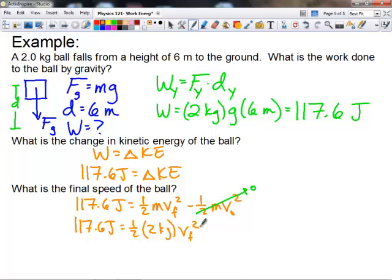So we'll say 117.6 joules equals one-half times two kilograms times Vf squared. So one-half times two, that gives us one. And if we divide joules by one kilogram, that gives us 117.6 meters squared per second squared, which is where we want to be. And then we have to just simply take the square root of it. And we get the final velocity of our ball as it strikes the ground is 10.84 meters per second.